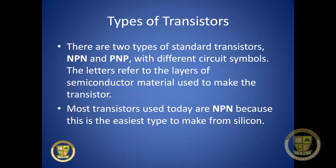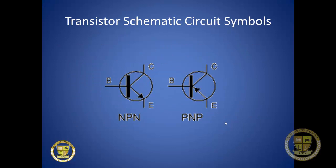There are two different types of standard transistors: NPN and PNP, each with different circuit symbols on a schematic. The letters refer to the layers of semiconductor material used. Most transistors today are NPN style because it's the easiest type to make from silicon. In cell phone repair, schematics are not often available, but when they are, they're very helpful. If you are looking at one, the NPN symbol is on the left and PNP on the right.